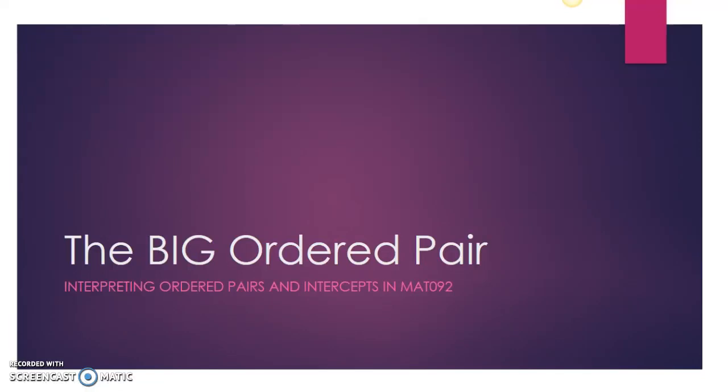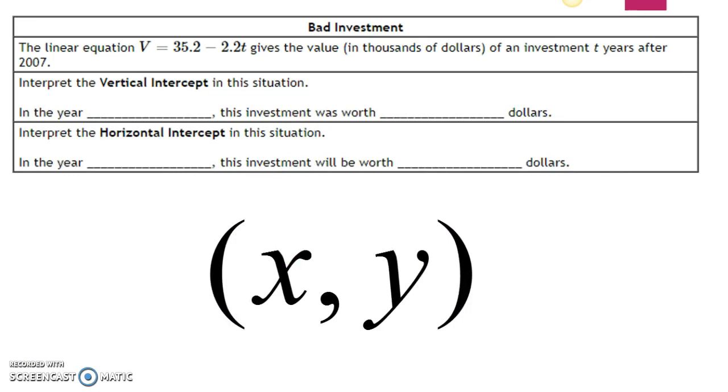I received several questions regarding vertical intercepts, horizontal intercepts, and interpreting ordered pairs. I thought I would make this quick video about the big ordered pair, which can help you understand how to interpret ordered pairs and intercepts. So let's take a look at a problem from Unit 6. The problem is called bad investment.